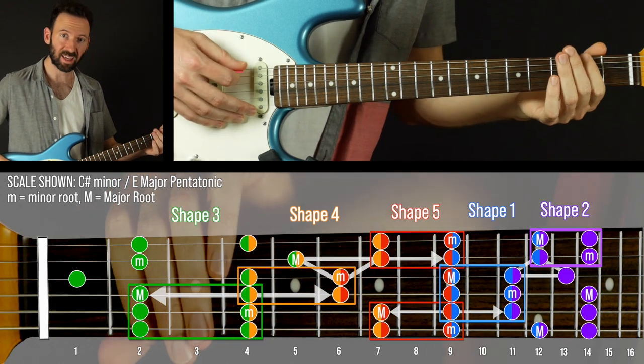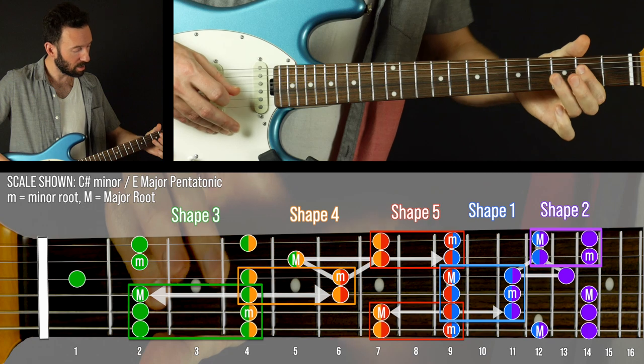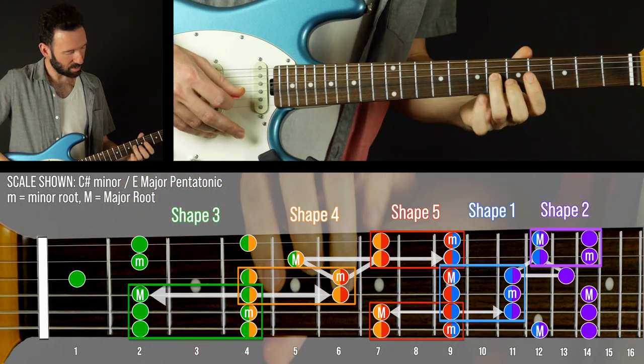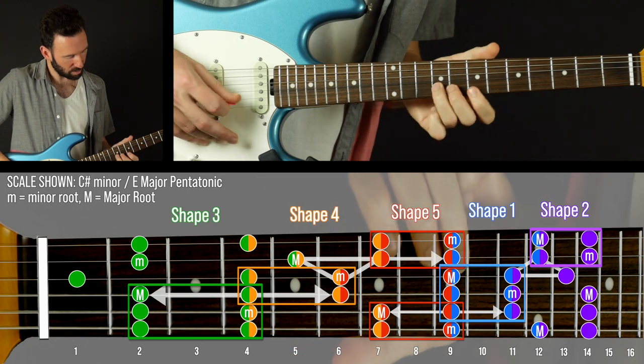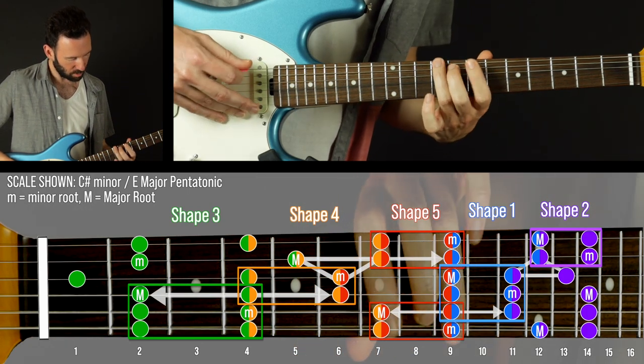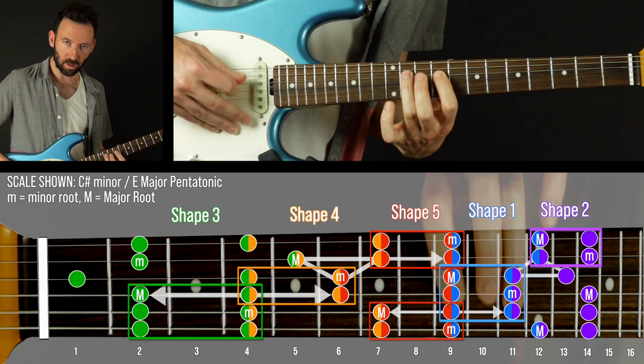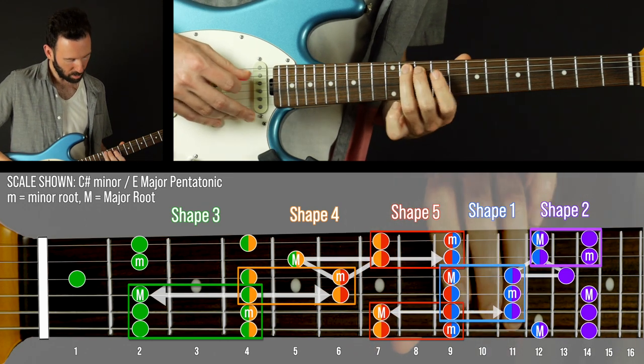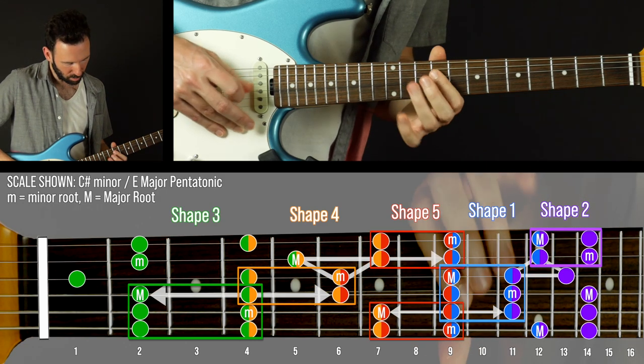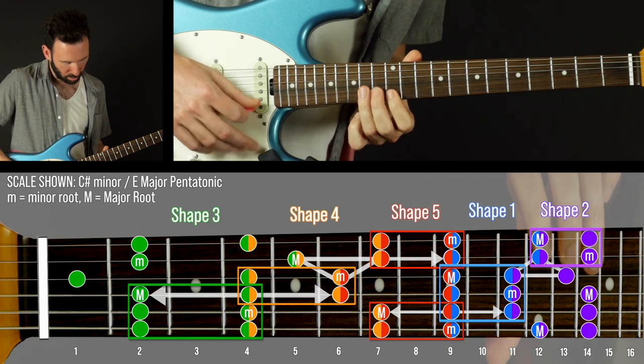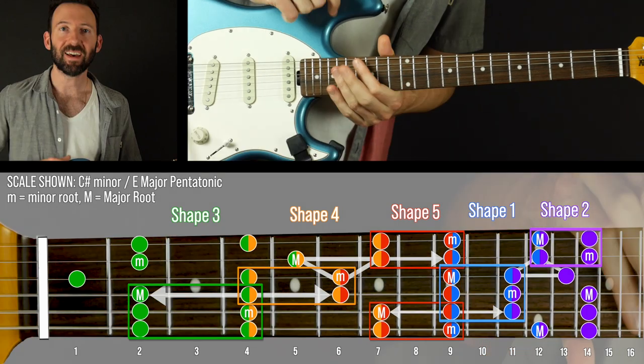And then practice sliding in and out of them using the three by two here, then this little triangle. So shift with the first finger, then on this one, slide into the three by two in shape one. Then the reverse triangle. Sorry if I went out of tune a little bit, and that's really it.